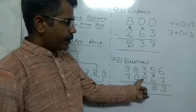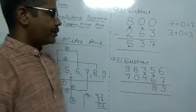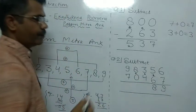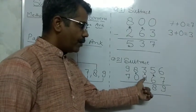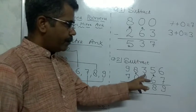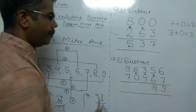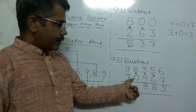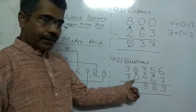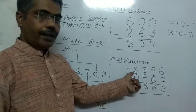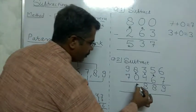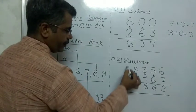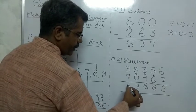5 cannot be subtracted from 3, so we use Ekatecane Purvend. Pramikkar Ankh of 5 is 5. 5 plus upper digit 3 is 8. This digit becomes 1. 1 can be subtracted from 8 easily. 7 and 9: 9 minus 7, we get 2.